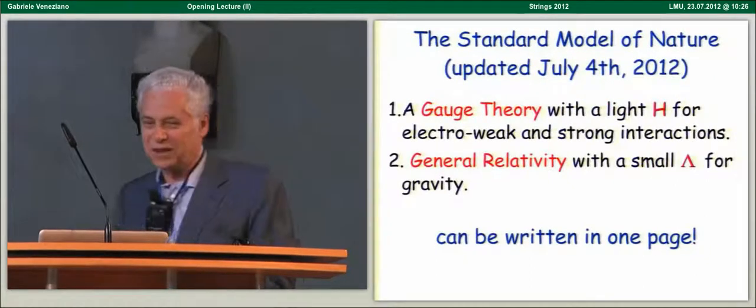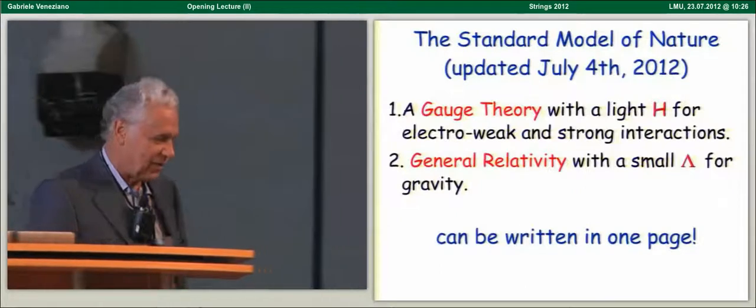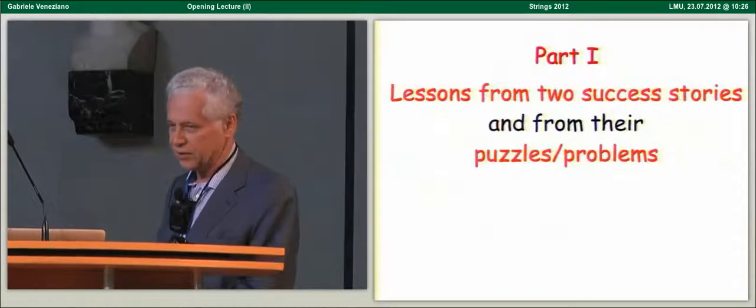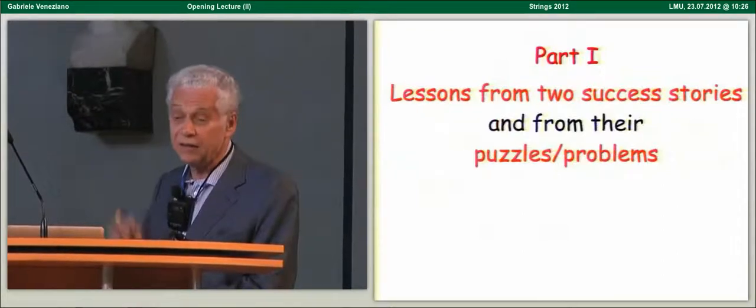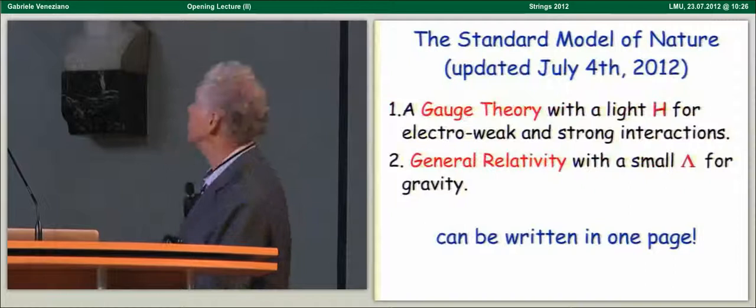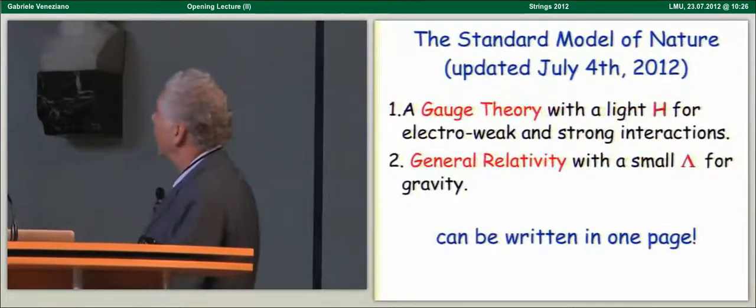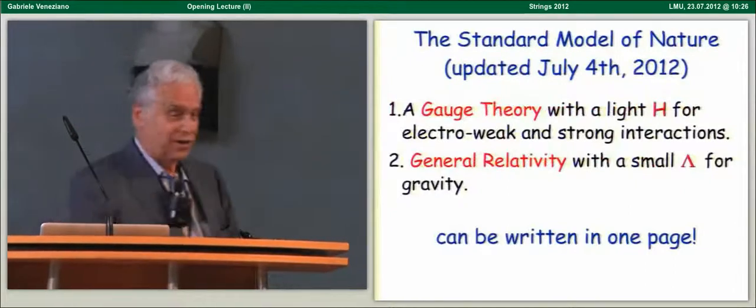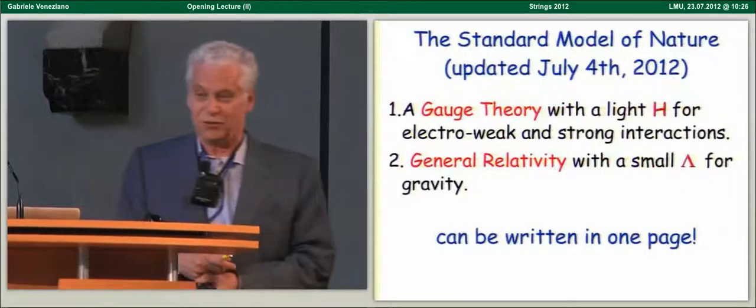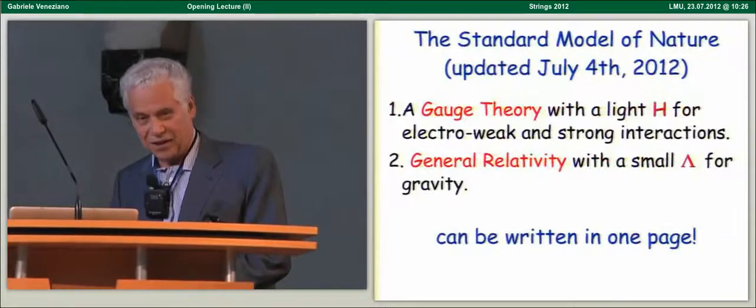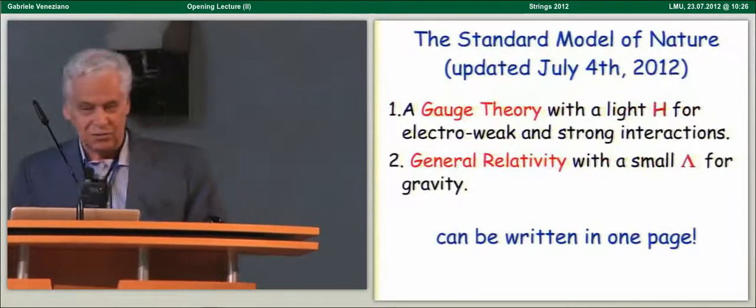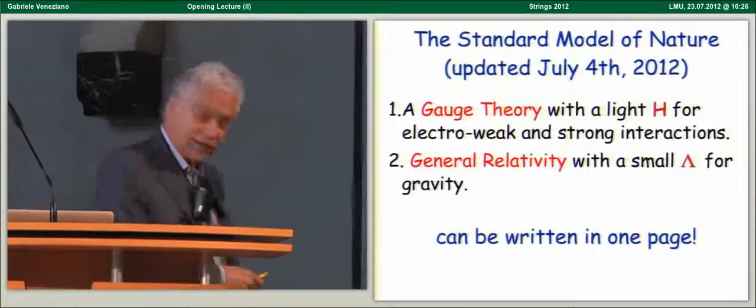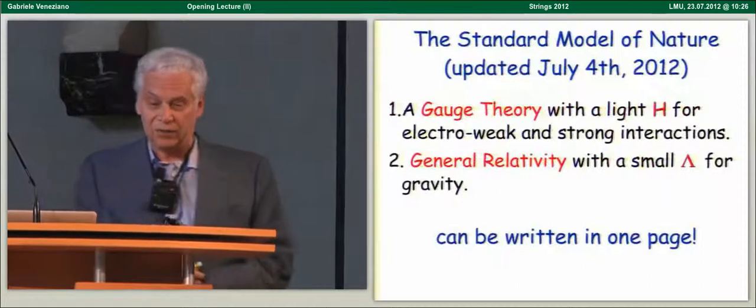So the first topic has to do with some lessons we can possibly draw from two success stories. These two success stories, and from their puzzles and problems, the two success stories concern what we may call the standard model of nature, as it has been updated on July 4th this year. On one hand, a gauge theory with a light Higgs for electroweak and strong interactions, and general relativity with a small lambda for gravity.